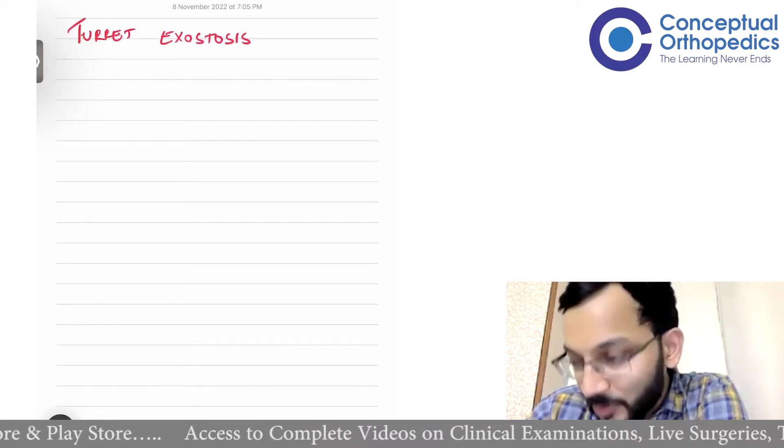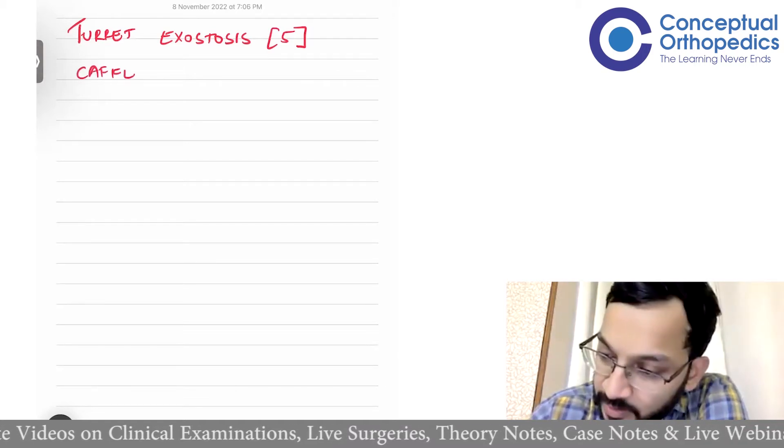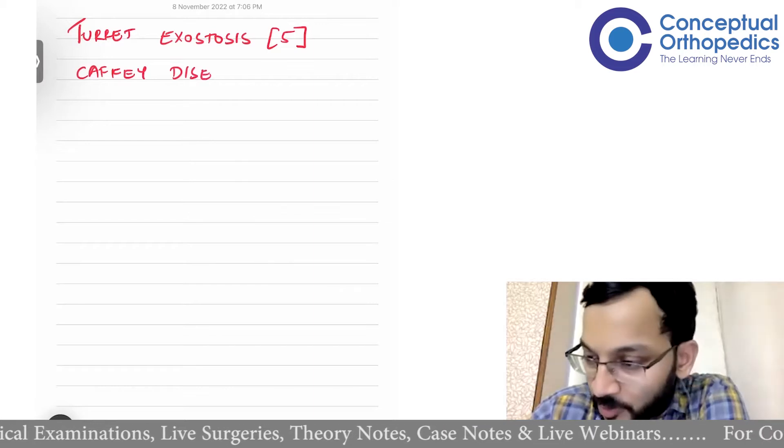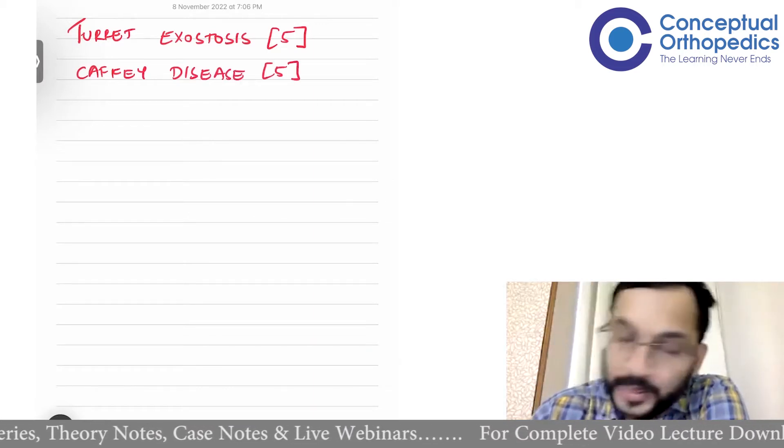The first question is a two-part question — it's on Turret's Exostosis and Caffey's disease, both for five marks each. For Turret's Exostosis, if you know what it is, you may get about three marks. For Caffey's disease, if you know what it is, you're looking at three to four marks; if you don't know, you're looking at zero. So these are hit-or-miss questions.